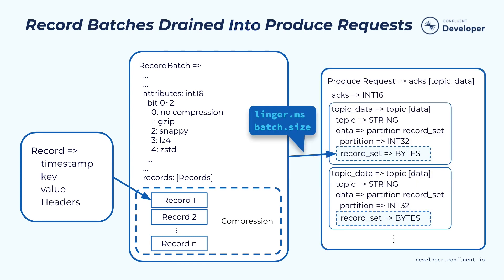The producer also has control over when those record batches should be drained and sent to the broker. This is controlled by two properties: one is by time, the other is by size. So once enough time or enough data has been accumulated in those record batches, those record batches will be drained and form a produce request, and these produce requests will then be sent to the corresponding broker.